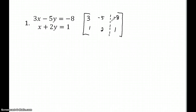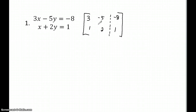Now I'm going to do a series of row reductions to get this into my identity matrix form: one, zero and one, zero, zero, one. A couple of rules: you can flip any two rows, you can multiply any row, you can add any row. You just cannot multiply or add single elements or add a number into a single row.